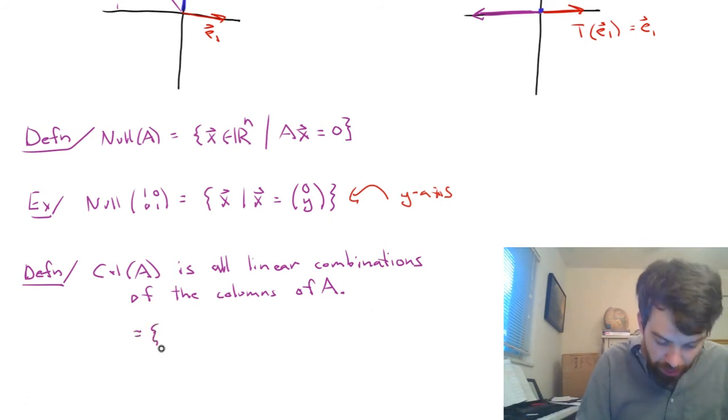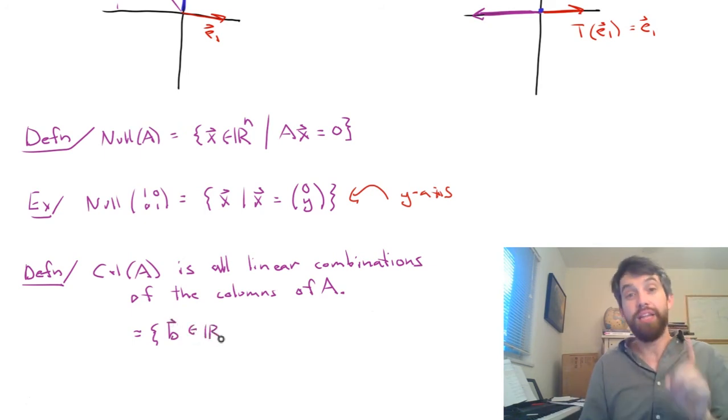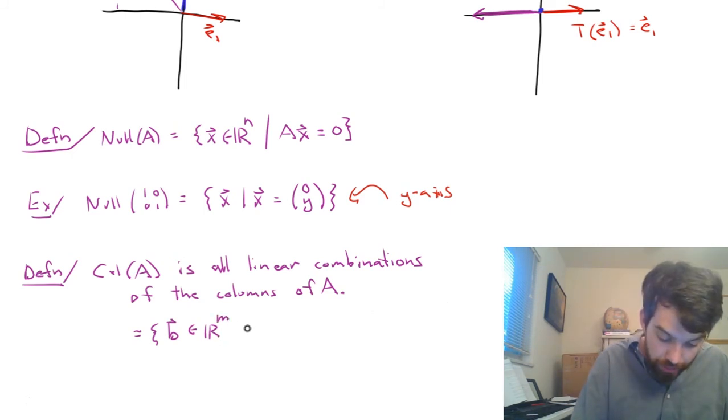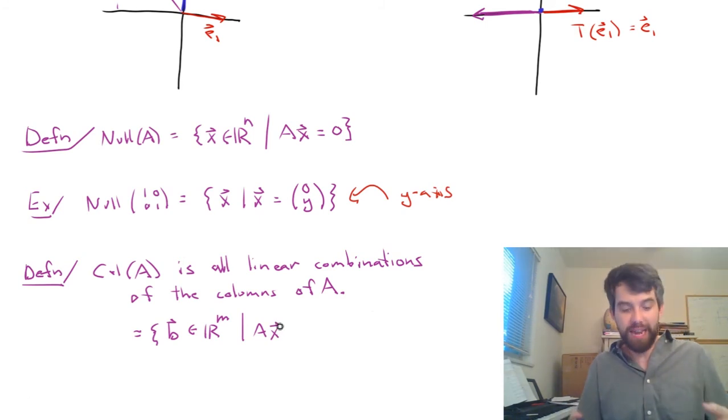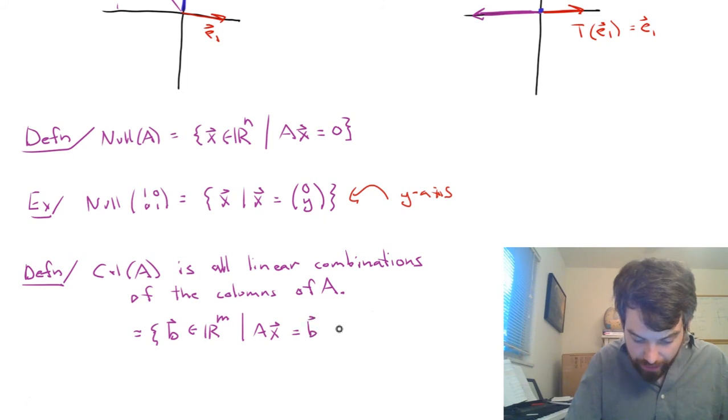In other words, I can write this in set builder notation as the set of all vectors B. They are going to be, by the way, living in my codomain, that has the property where some linear combination of the columns of A, that is some AX, is going to be equal to that vector B.